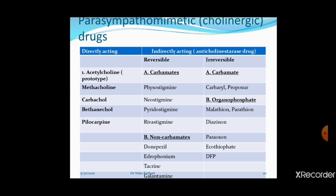M1 receptors are present on gastric cells. M2 receptors are present on myocardial cells. M3 receptors act upon smooth muscle cells in the body, blood vessels, ciliary body, circular muscles of the iris, lacrimal glands, gastrointestinal tract, and urinary bladder.